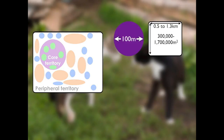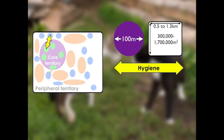Although cats can't move any of the items in their territory, they do organise the way they utilise it to optimise certain characteristics. The first of those is hygiene. Cats will locate their latrine sites within a convenient distance of a resting and hunting area, but not close enough that it's going to increase the risk of contamination or disease spread.